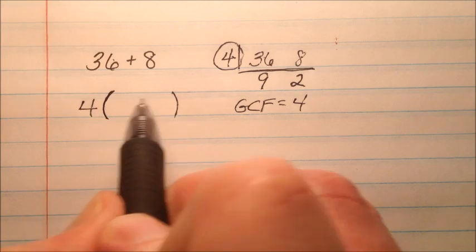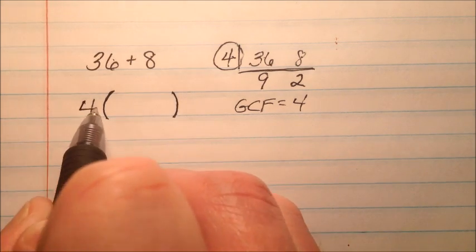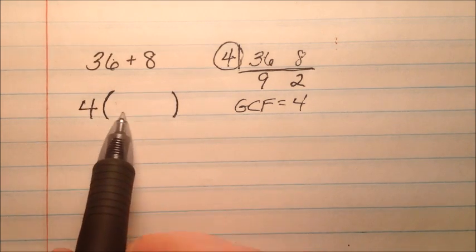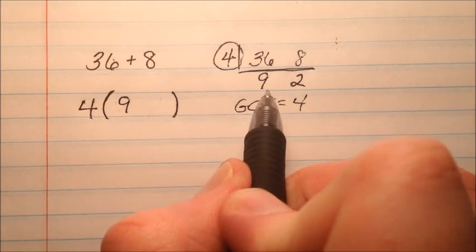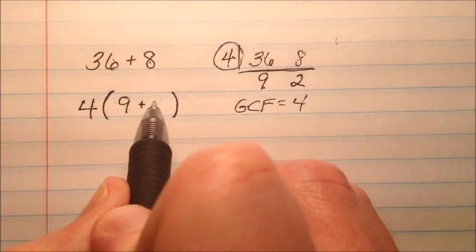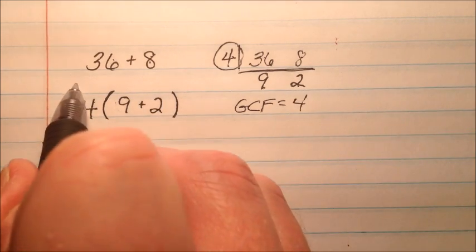So I'm going to make it look like the distributive property, like 4 is out front, so what numbers go in here? Well, my 36 divided by 4 is my 9 that I had right here plus my 8 divided by 4 which is my 2 which I had here.